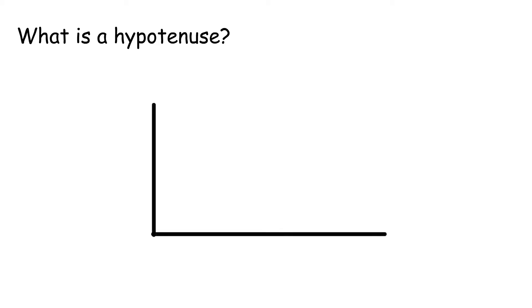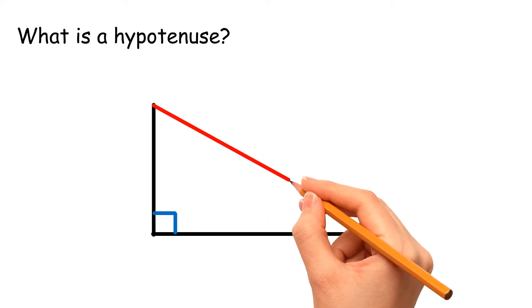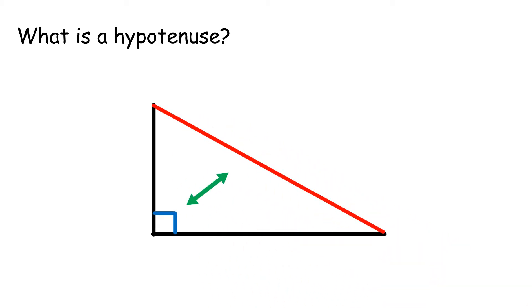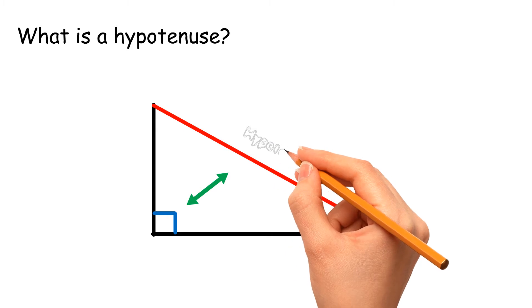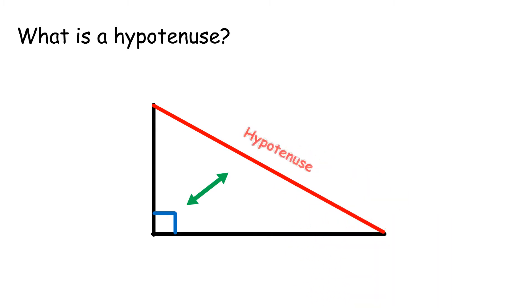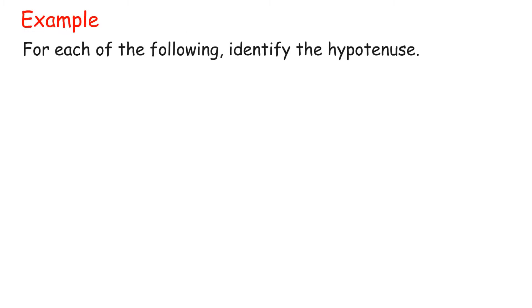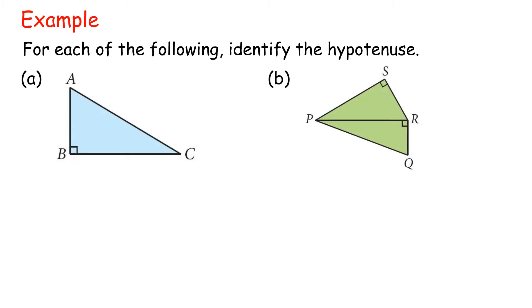What is a hypotenuse? For a right-angled triangle, the longest side opposite to the right angle is known as the hypotenuse. Example: for each of the following, identify the hypotenuse.